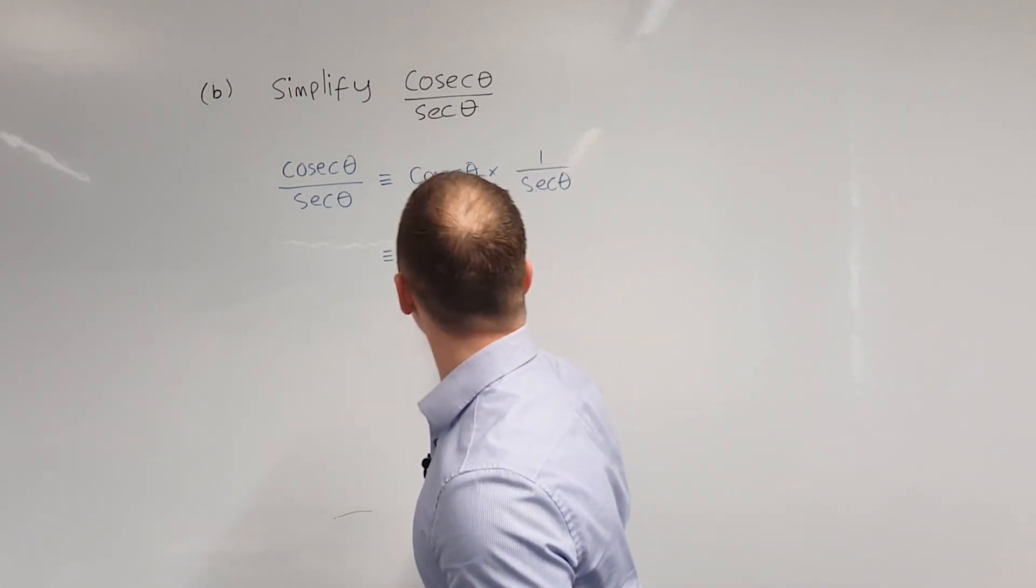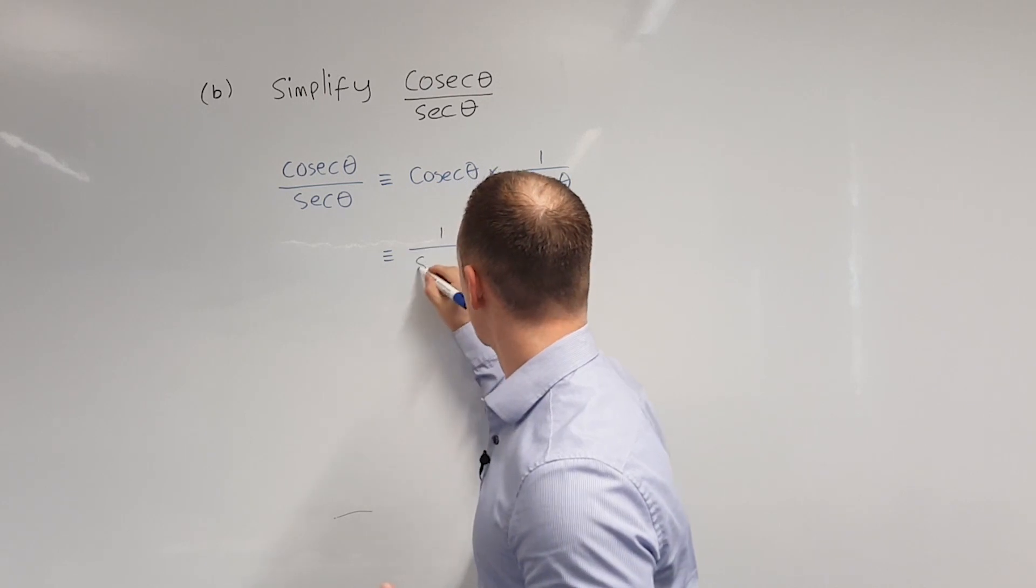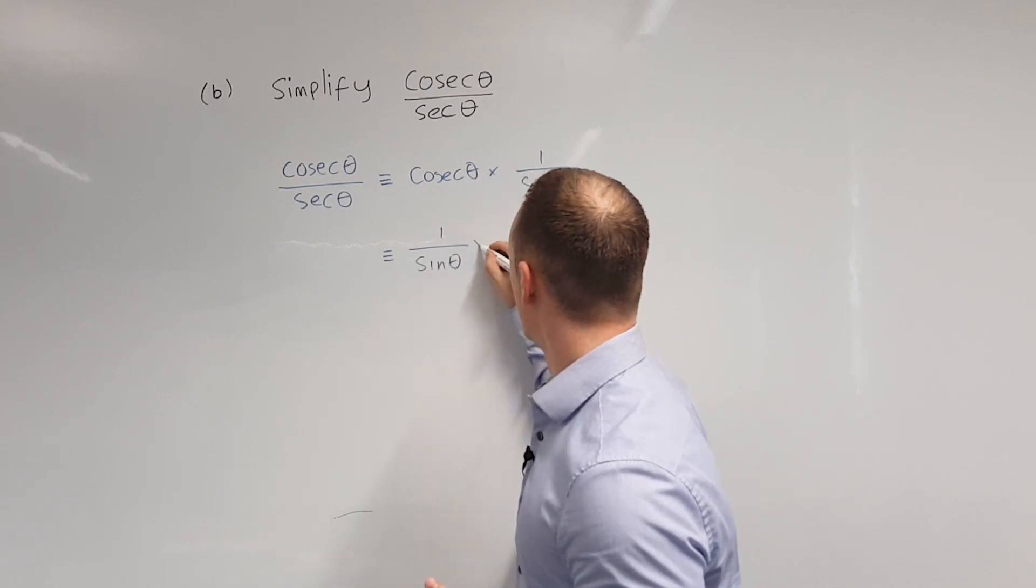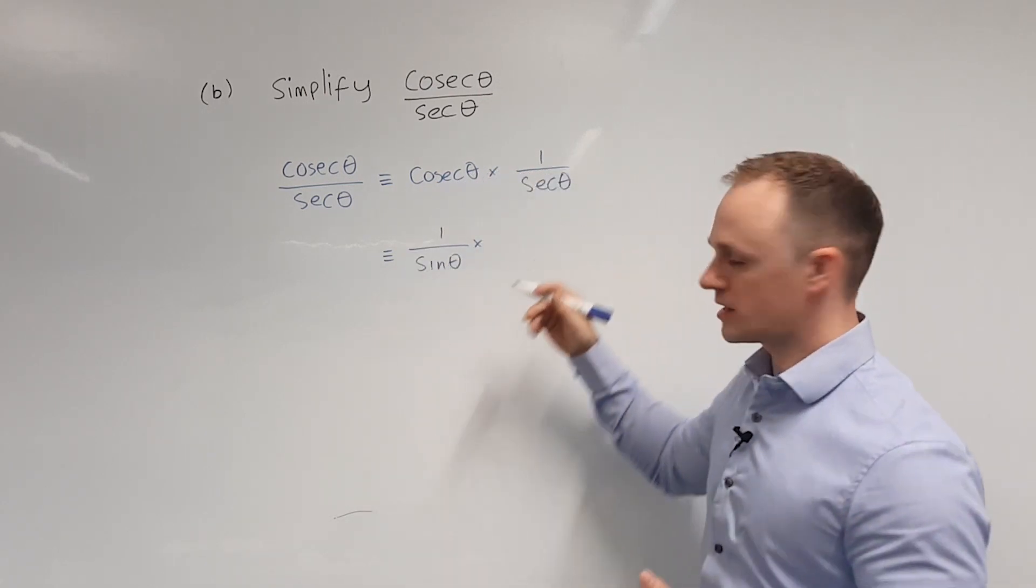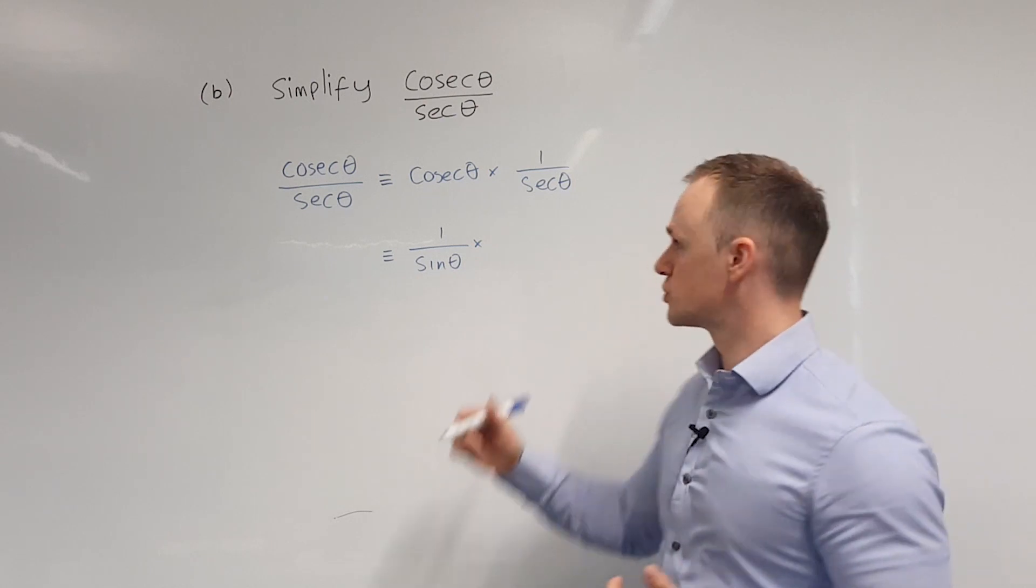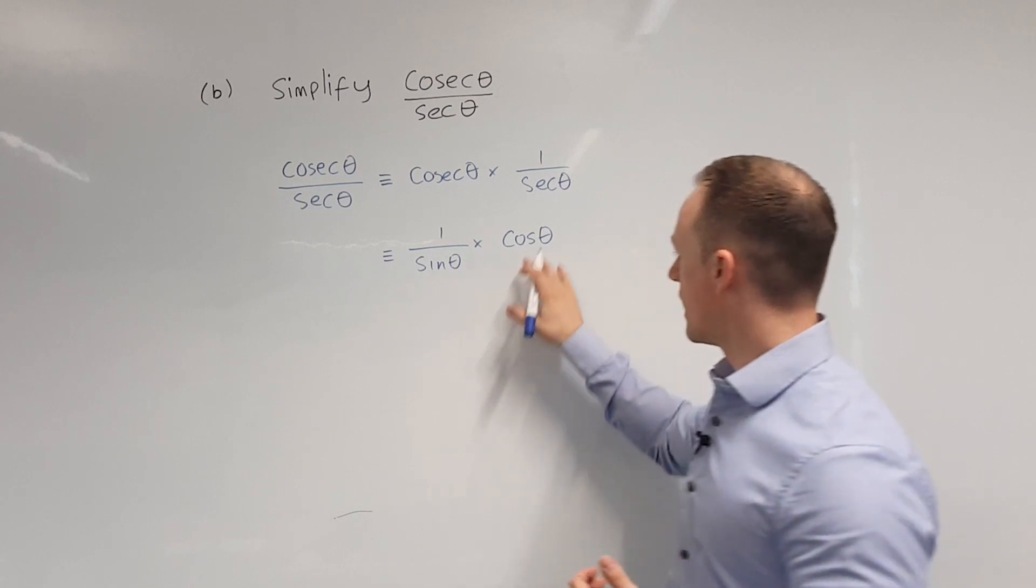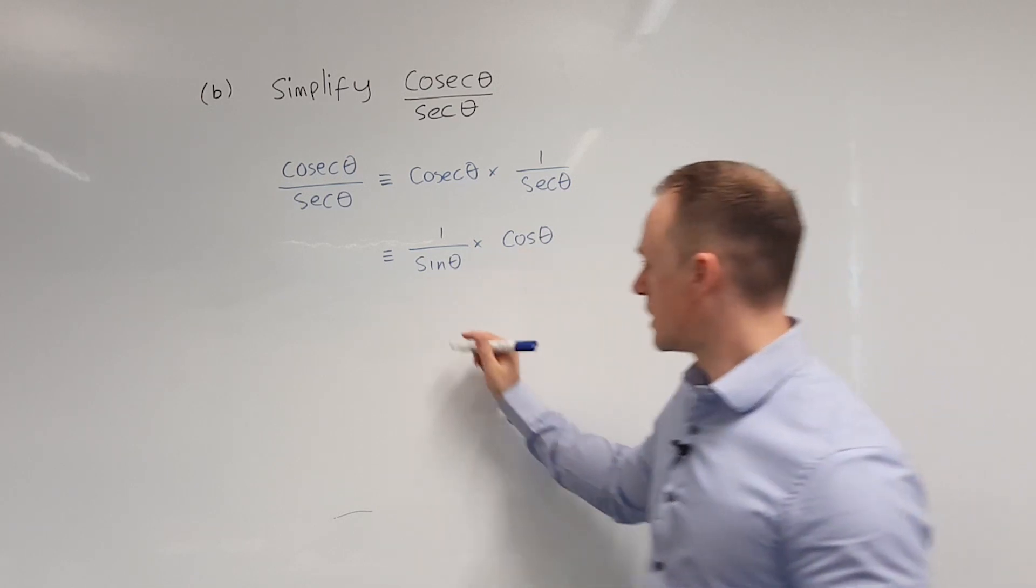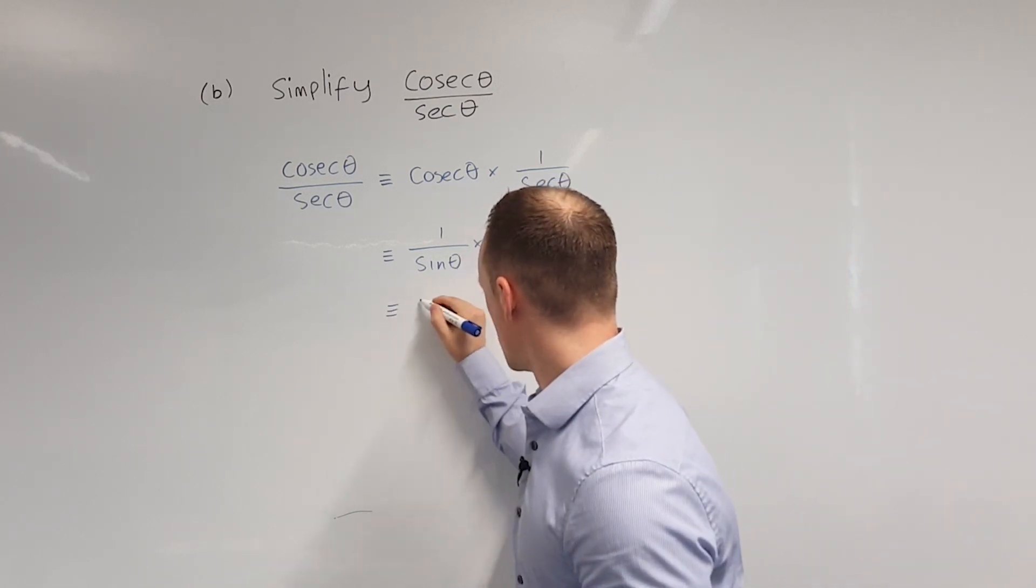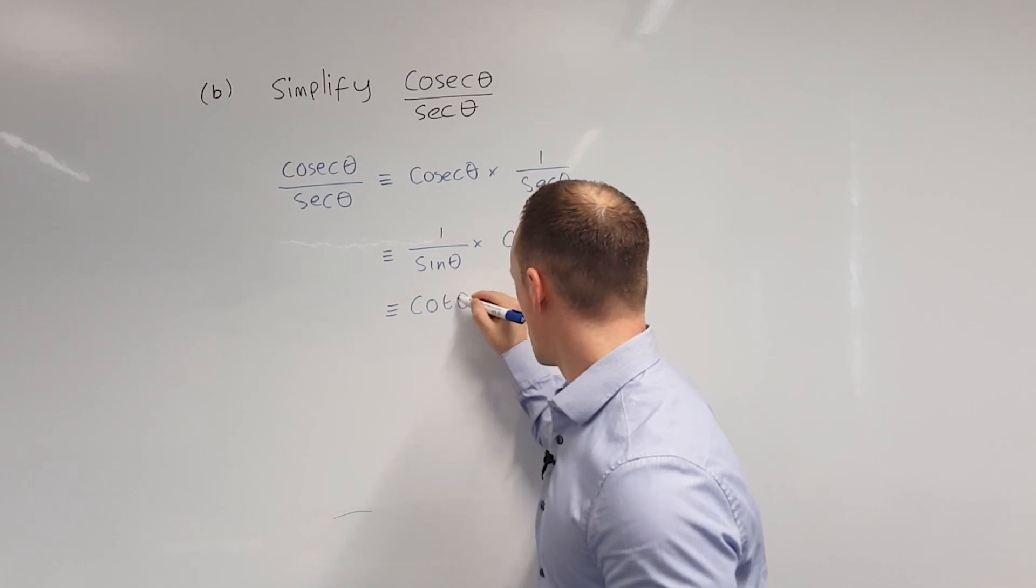So cosec theta becomes 1 over sin theta and we're multiplying that by 1 over sec theta is just going to become cos theta. So here we have cos theta divided by sin theta which we can write as cot theta.